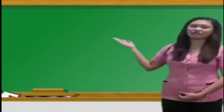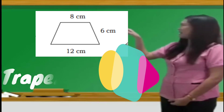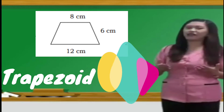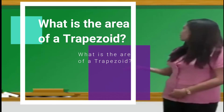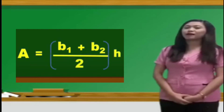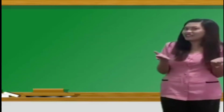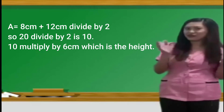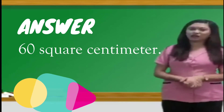This is a trapezoid. That is Base 1 and that is Base 2. The height is 6 centimeters. What is the area of the trapezoid? Here's the formula: Area = (Base 1 + Base 2) ÷ 2 × Height. The answer is 60 square centimeters.